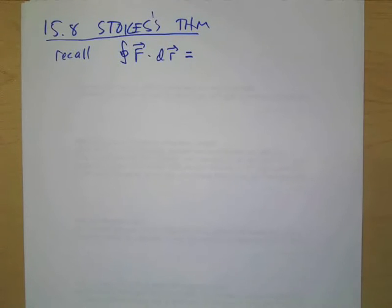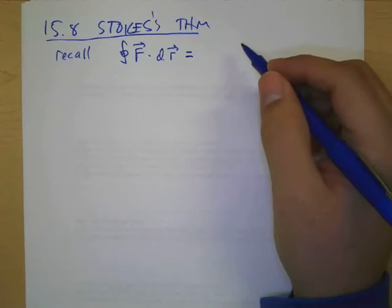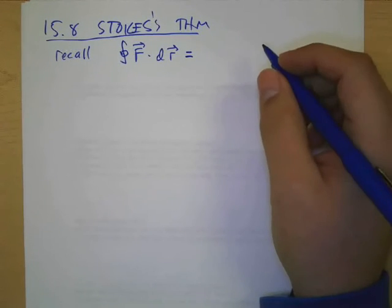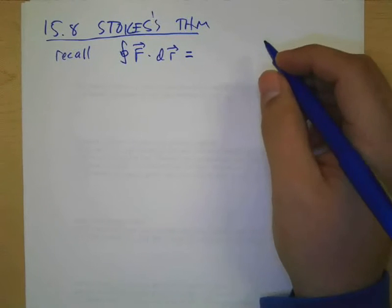The thing that applies to phi of one endpoint minus the other endpoint. That's only if it's a conservative vector field, right? So if we don't know if it's conservative or not, we had Green's Theorem, yes.